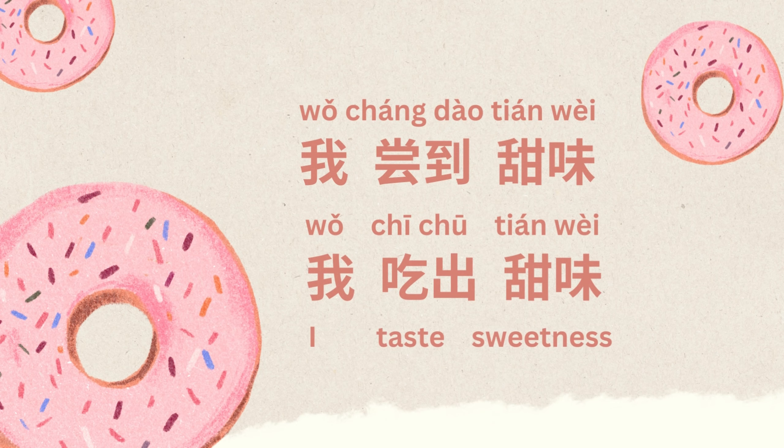我尝到甜味 or 我吃出甜味。 甜 means sweet. 甜味 is sweet flavor. So it means I taste sweetness.